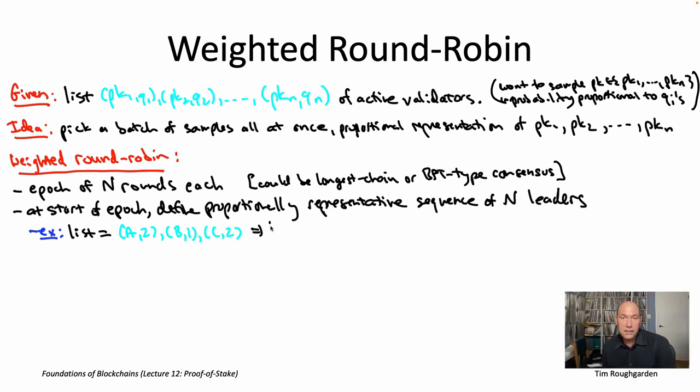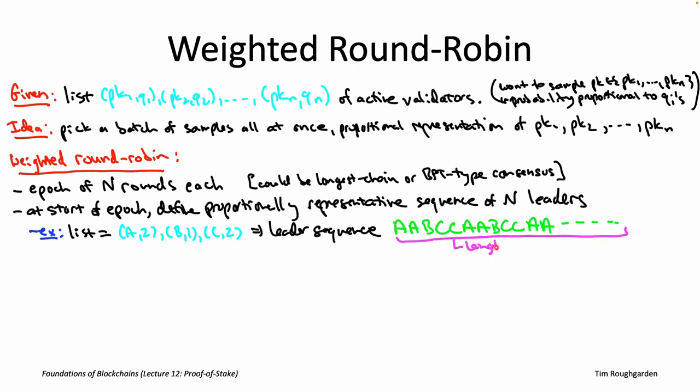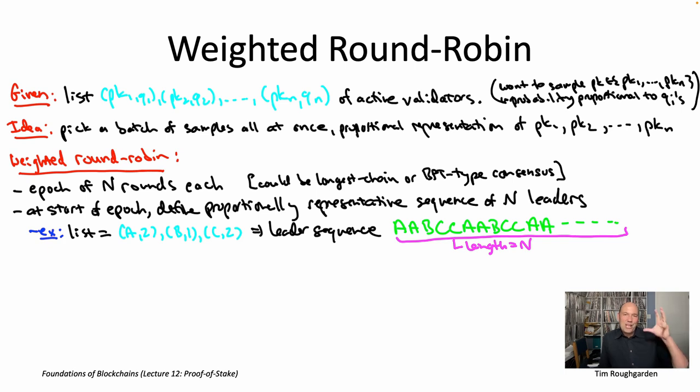Well, then you could have a leader sequence that really just picks A twice, then picks B once, then picks C twice, and then starts all over again. Now, if N is a multiple of five, you're going to get perfectly proportional representation, right? Exactly 40% A's, 20% B's, 40% C's. If it's not a multiple of five, you're going to have a little bit of over-representation of the A's and a little bit of under-representation of the C's, but whatever. It's basically still 40, 20, 40, as long as N is reasonably large.